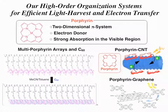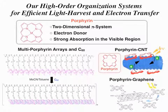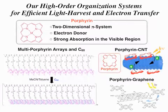The aggregated states efficiently broaden the absorption property in the visible region. We have successfully constructed porphyrin-based nano-architectures using fullerene, carbon nanotubes, and graphene. The solar energy conversion properties of these organized systems are much larger than those of the non-organized systems.